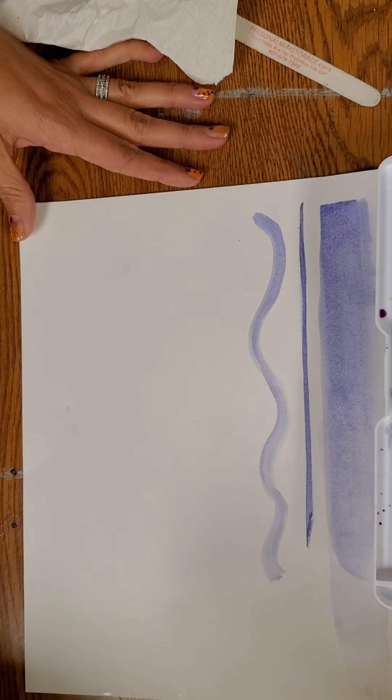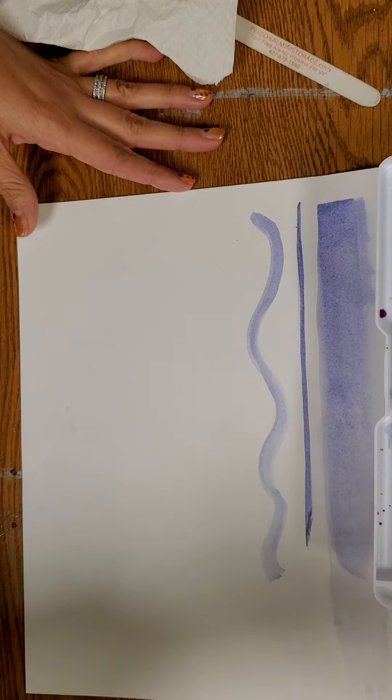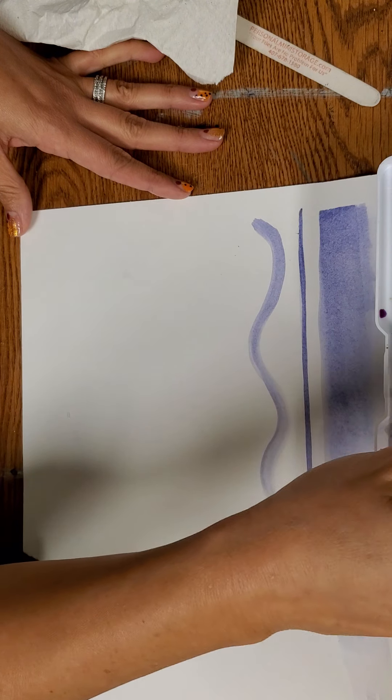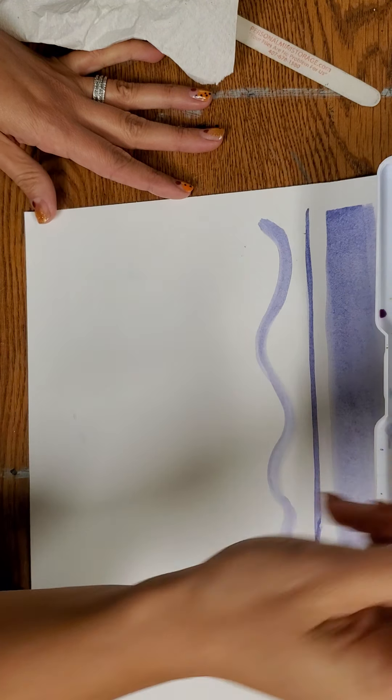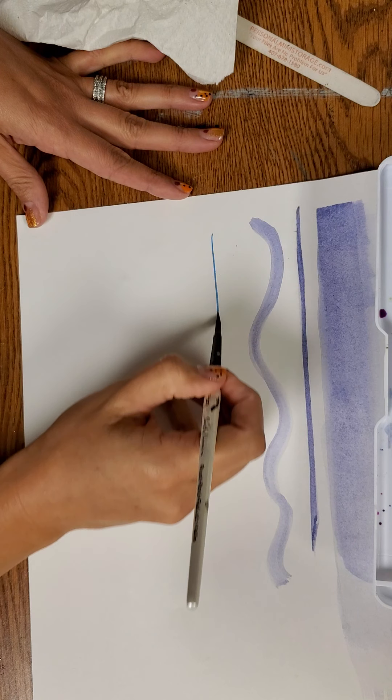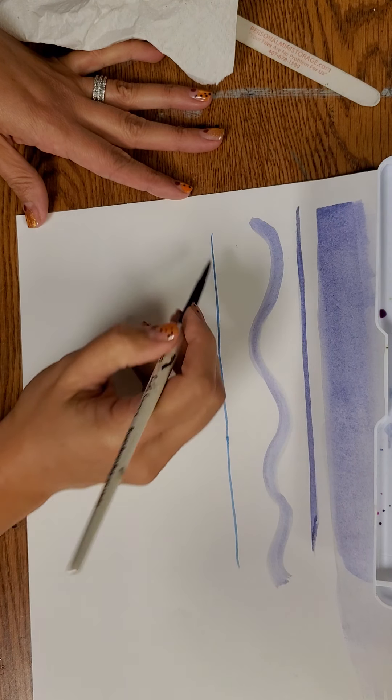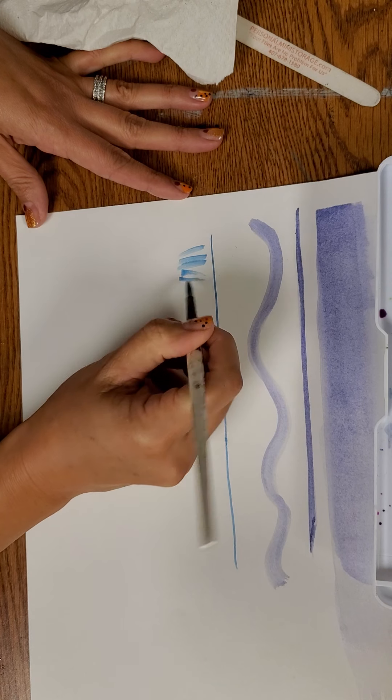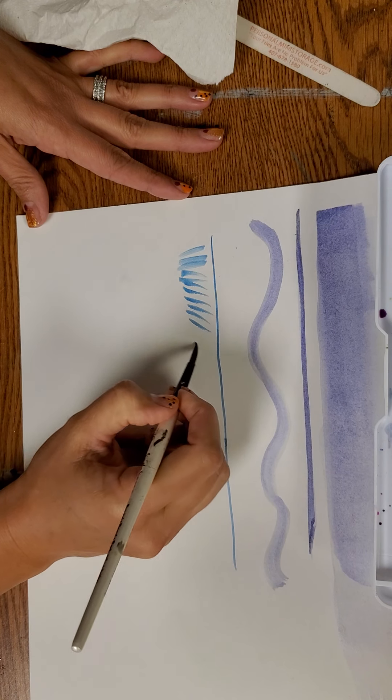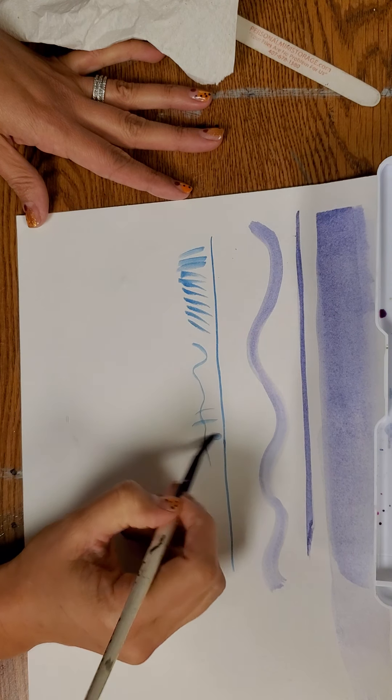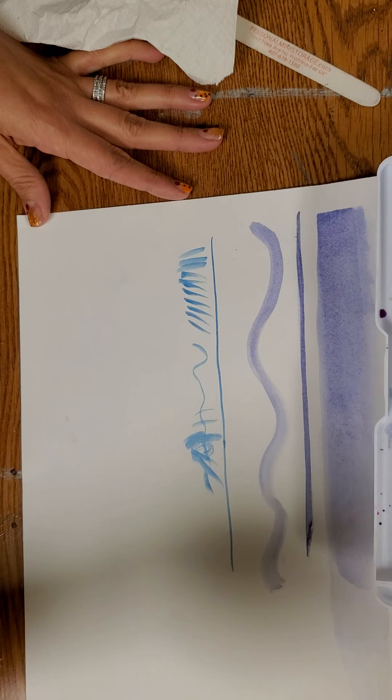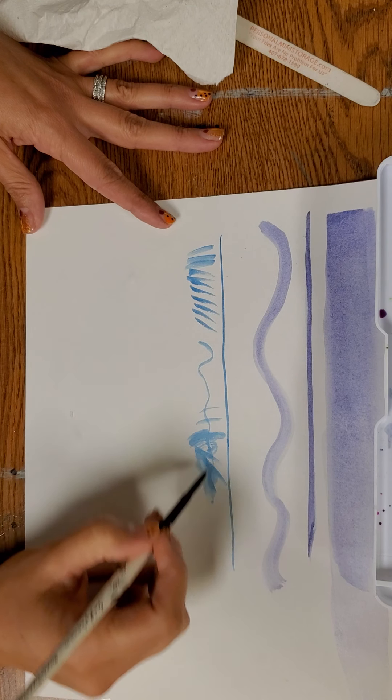Next is your round brush. You're going to again take whatever color you want, and this is how you can use this brush. You can use this as a thin brush for hair, or grass, or just small little details that get closer in.